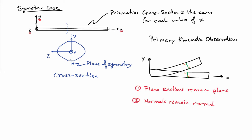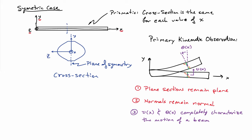The primary kinematic observation is that plane sections remain plane when you bend the beam, and normals remain normal. So any 90-degree angles in the x-y plane remain 90-degree angles after deformation. The vertical motion v of the centerline and the rotation of the cross-section completely characterize the motion of all points in the beam. So v and theta are going to be the primary unknowns in our problem — unlike in torsion and the axial force case where we only had one unknown field.